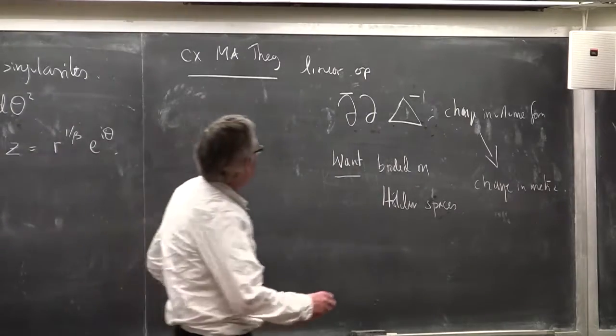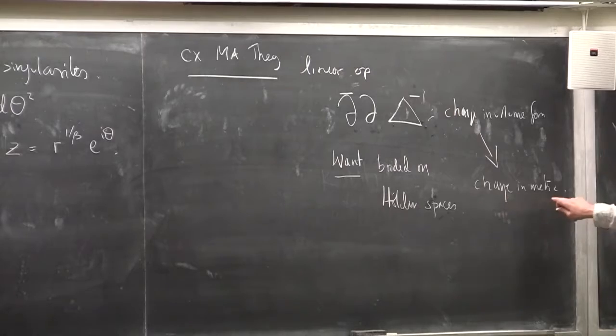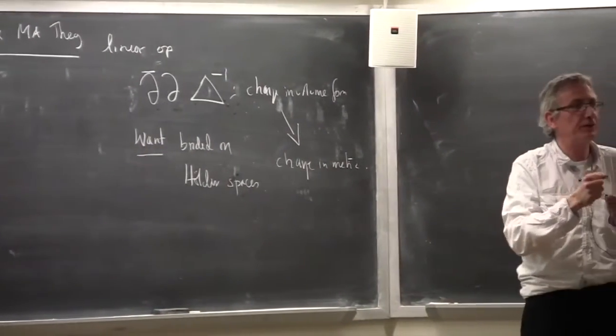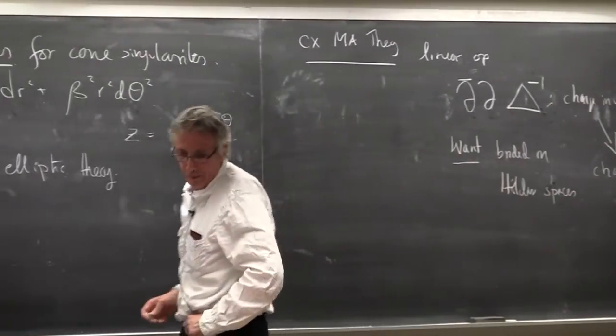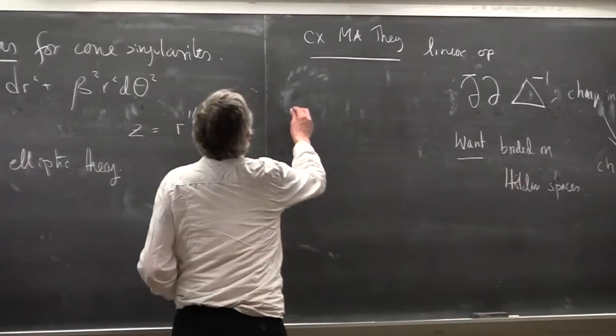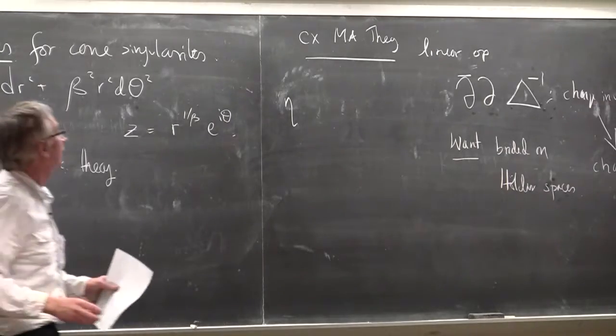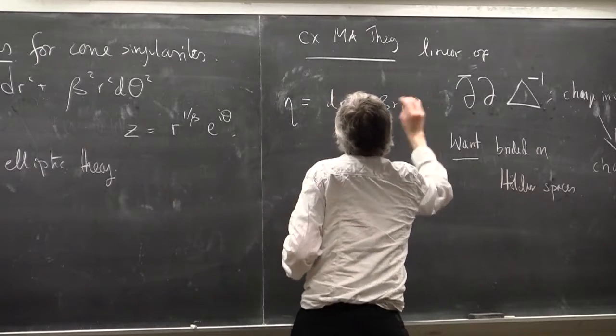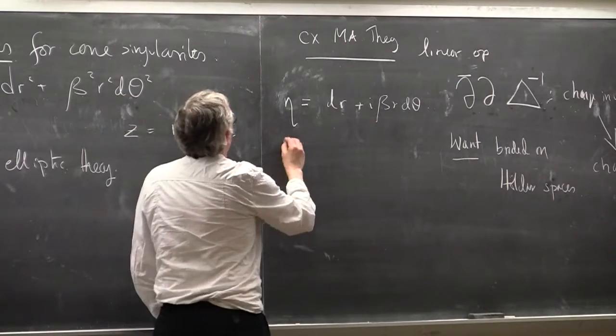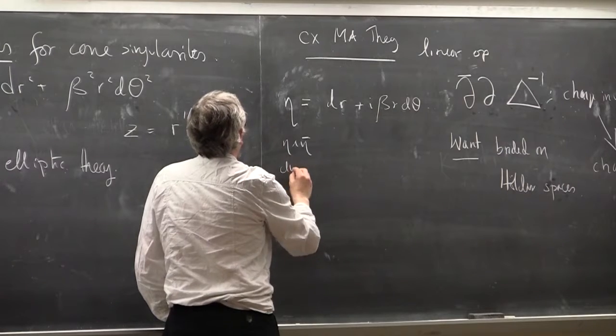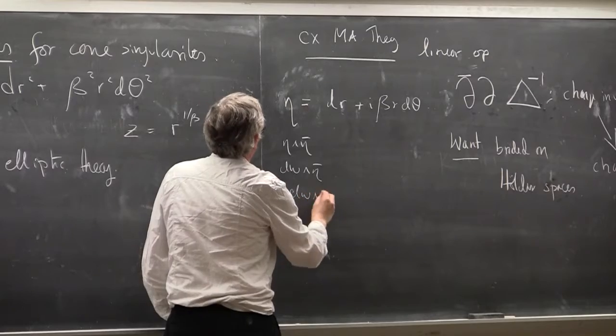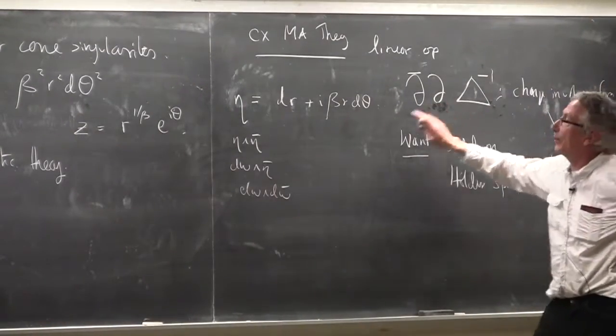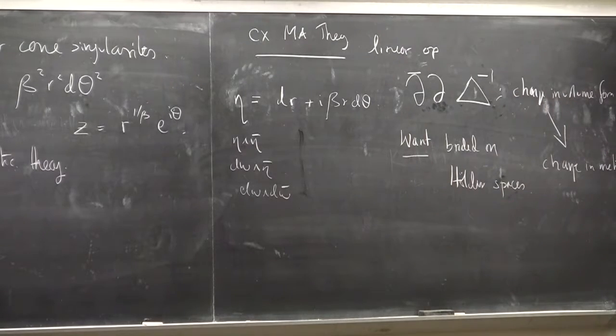It's not really quite clear even what this means initially, because the output is going to be a 1-1 form. What do we mean in this conical situation to compare the values of a 1-1 form at different places? What we mean is that we'll express it with a standard orthonormal basis. We can write eta as dr plus i beta r d theta, then write down a standard basis of the form eta wedge eta bar, dw wedge eta bar, and dw wedge dw bar. We express the components with respect to this basis, and we want this to be Hölder in the ordinary sense.